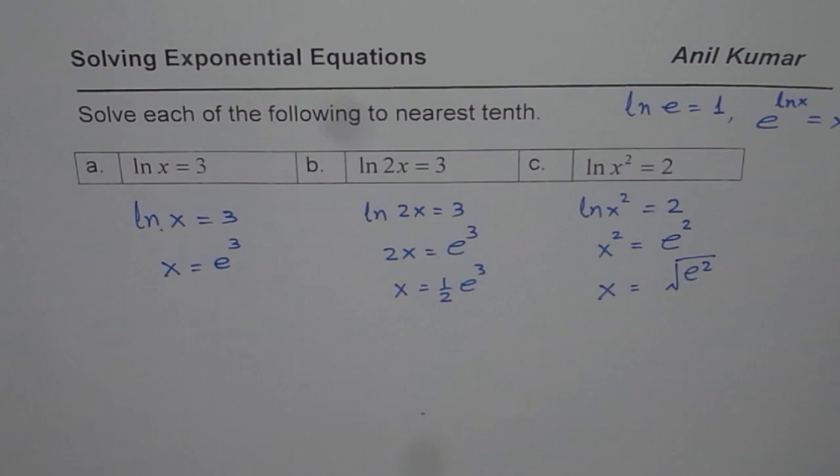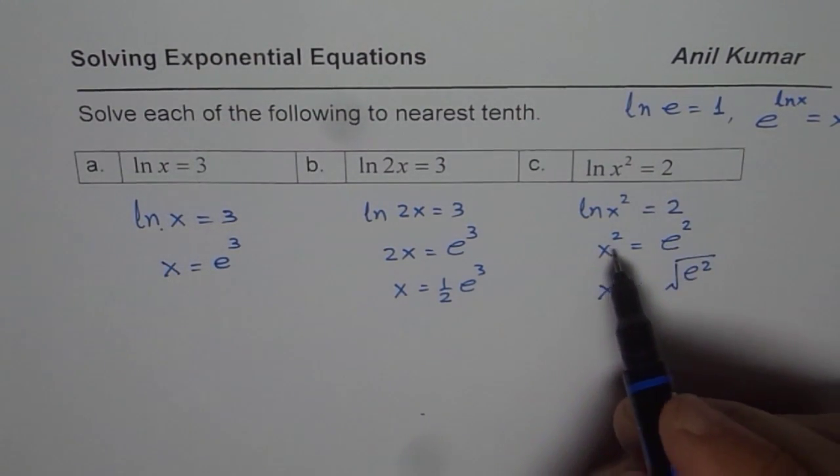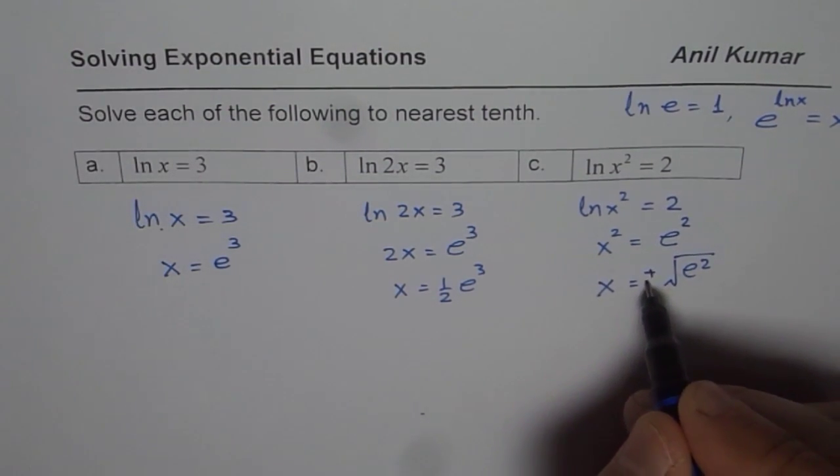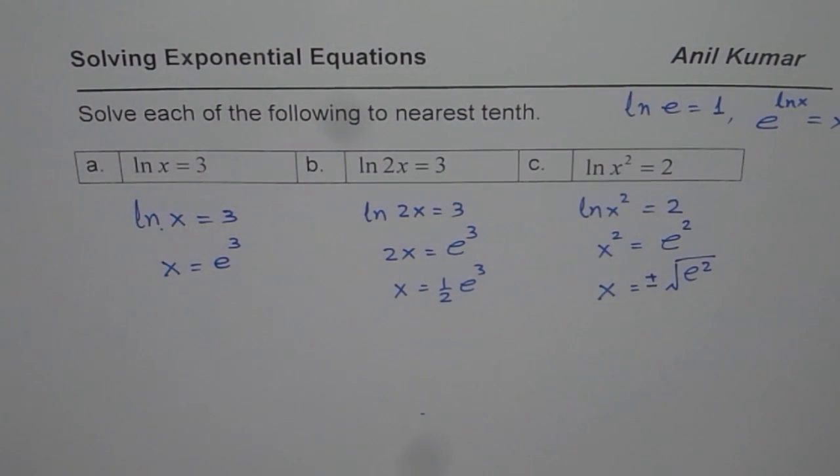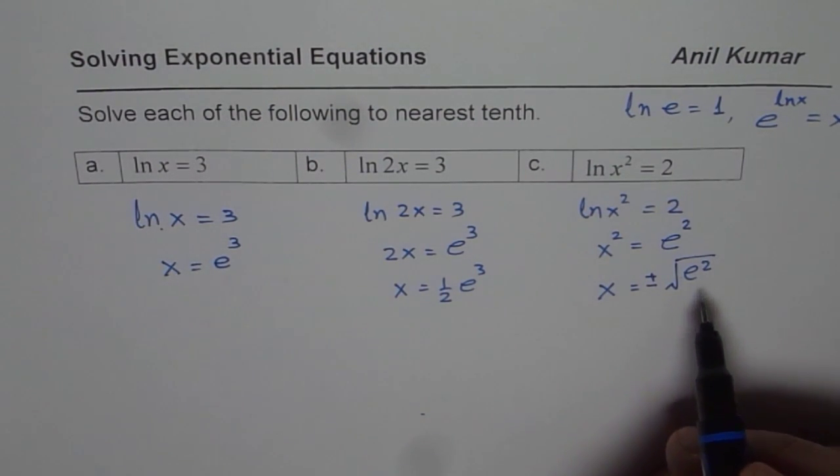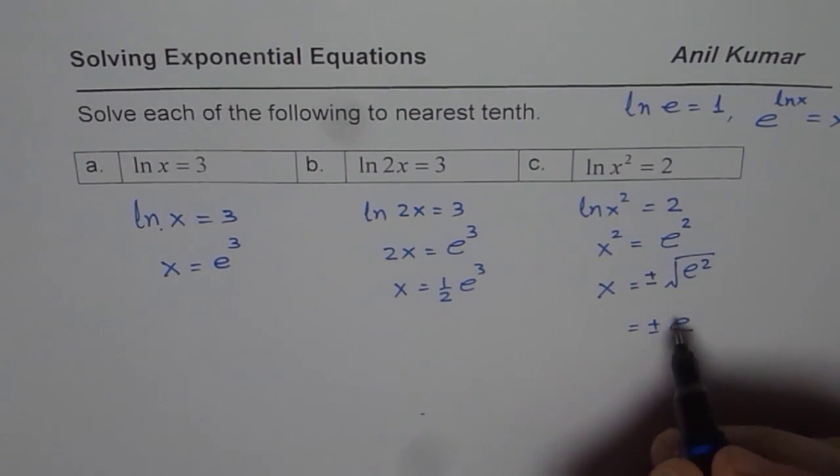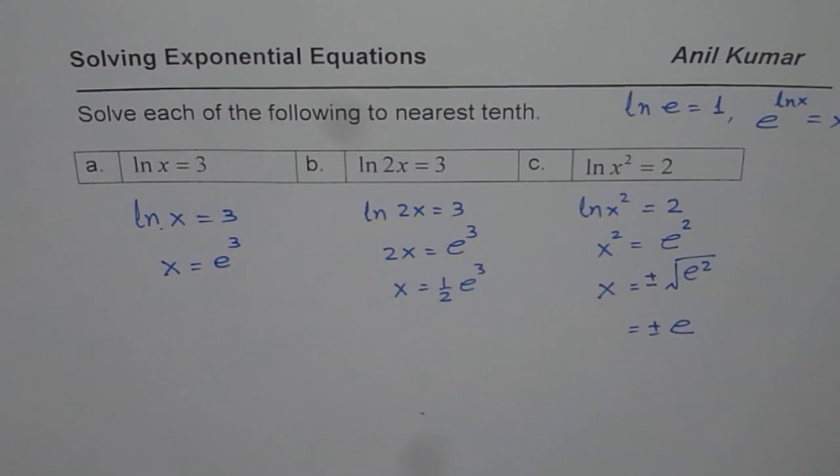If I have this particular value and I am square rooting, I can take both positive and negative value. So basically, it is plus and minus e. That is the answer which you get.